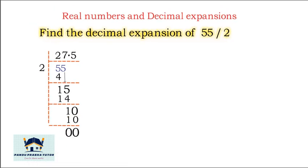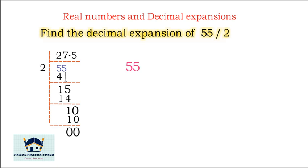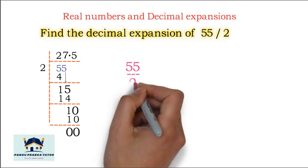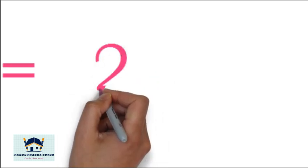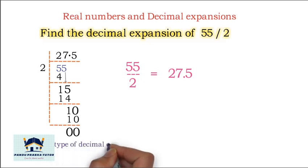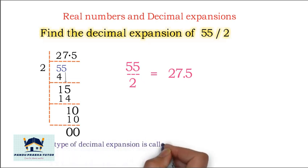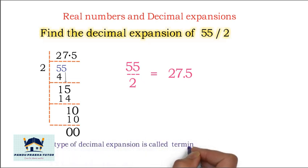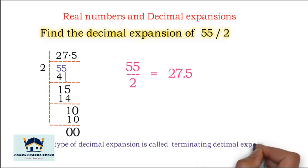55 divided by 2 is equal to 27.5. This type of decimal expansion is called Terminating Decimal Expansion.